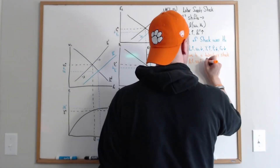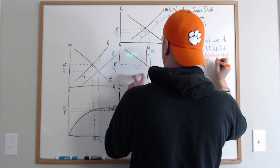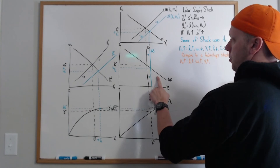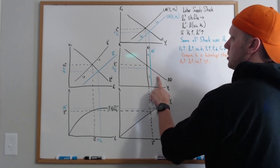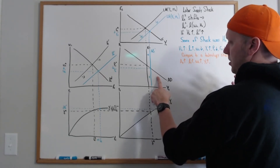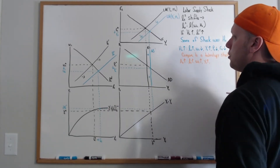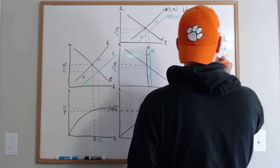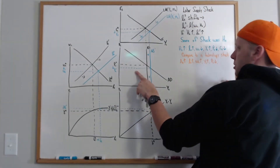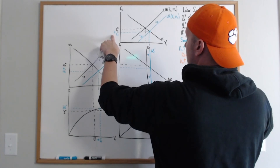Under a technology shock, wages increase and output goes up. Aggregate supply shifts to the right — just like under the labor supply shock — but it doesn't shift by as much. When we shift the production function up, the aggregate supply curve moves a lot further to the right. So magnitudes matter a little bit here. Output goes up, aggregate supply shifts out along a downward-sloping aggregate demand curve, so the price level falls. The LM curve moves because the price level fell, and because the price level fell the real interest rate falls.